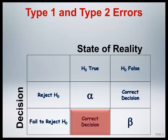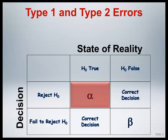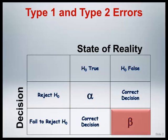If the p-value is less than or equal to alpha, the decision will be to reject the null. If in reality the null is indeed true, the decision to reject the null is not the correct decision to make and an error has been made. If the p-value is greater than alpha, the decision will be to fail to reject the null. If in reality the null is indeed false, the decision to fail to reject the null is not the correct decision to make and an error has been made.